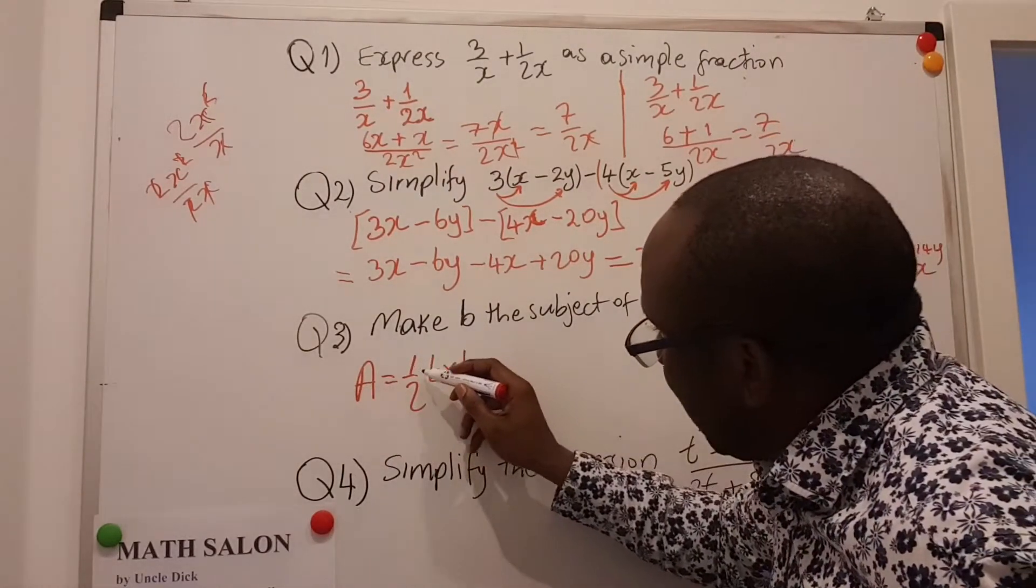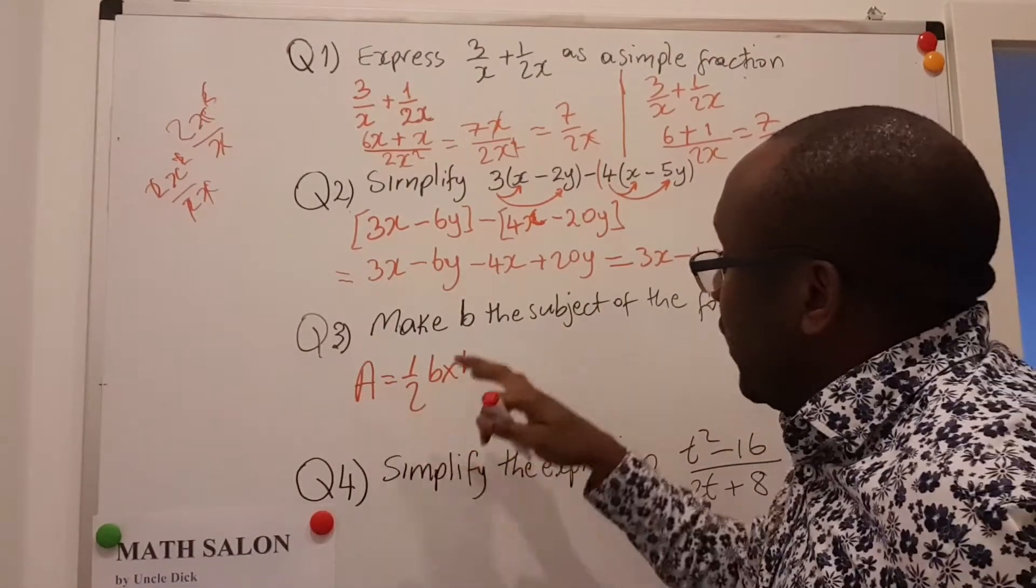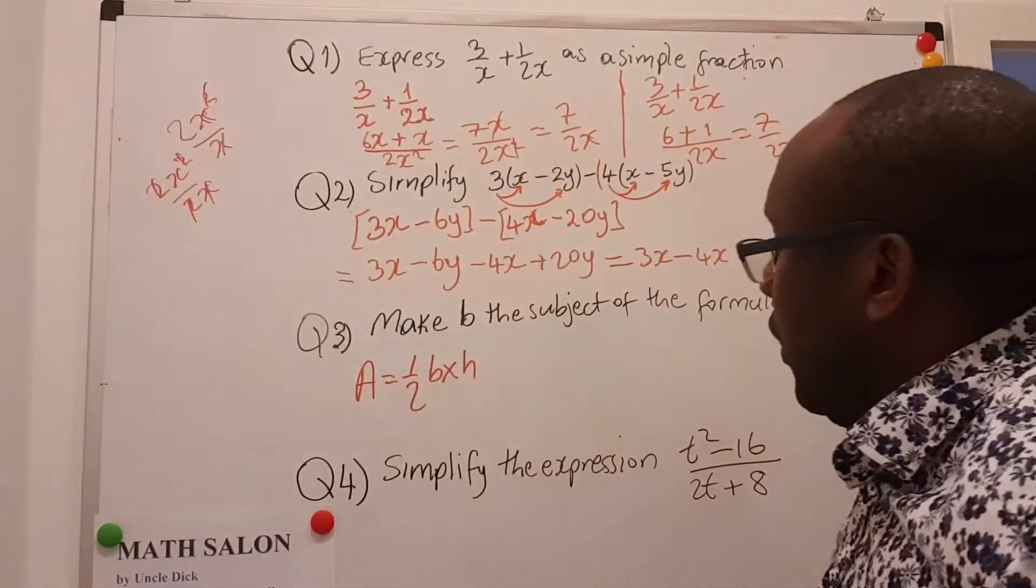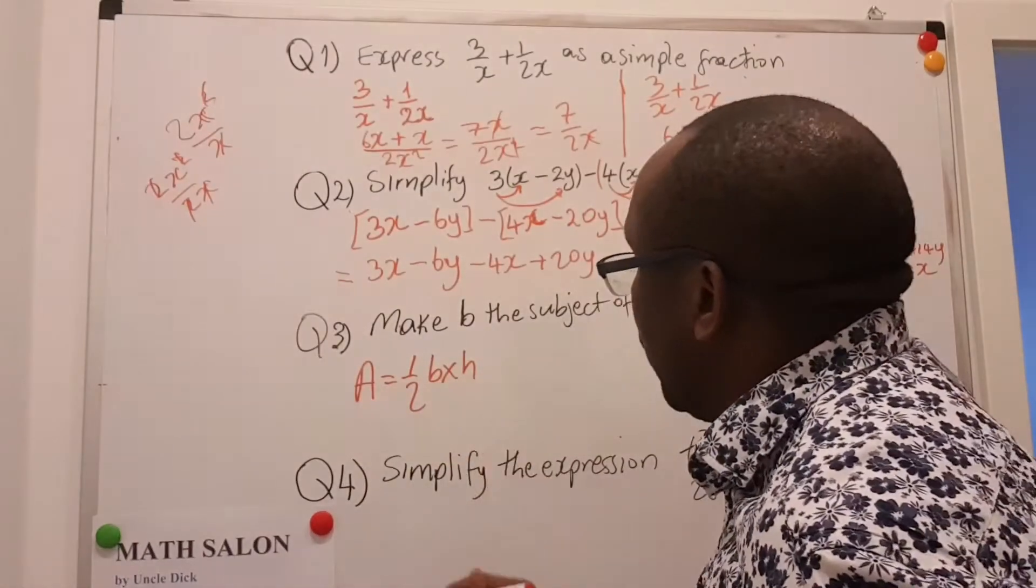They would want us to make B the subject of the formula, which means we are expected to get a new equation that says B is equal to something else. In order to do that, we have to make sure that we play with our mathematics and leave B alone.